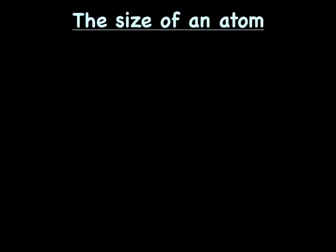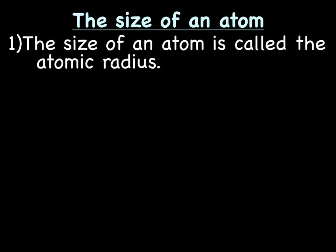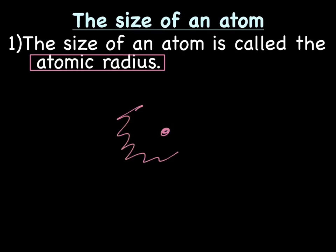The first trend we're going to talk about is the size of the atom. When we're talking about the size of the atom, we usually talk about the atomic radius. So if this was the nucleus, and out here we have the electron cloud, when we measure the size of the atom, we're measuring its radius. Whether I use the terminology 'size of the atom' or 'atomic radius,' we're really talking about the same thing.